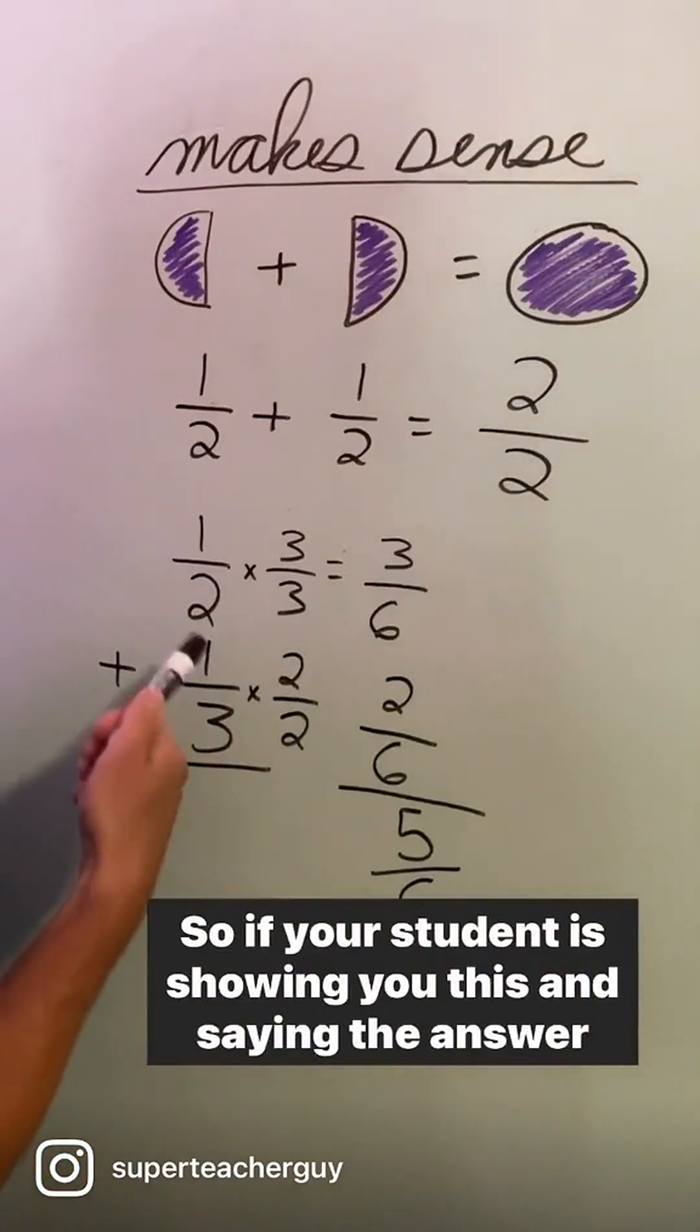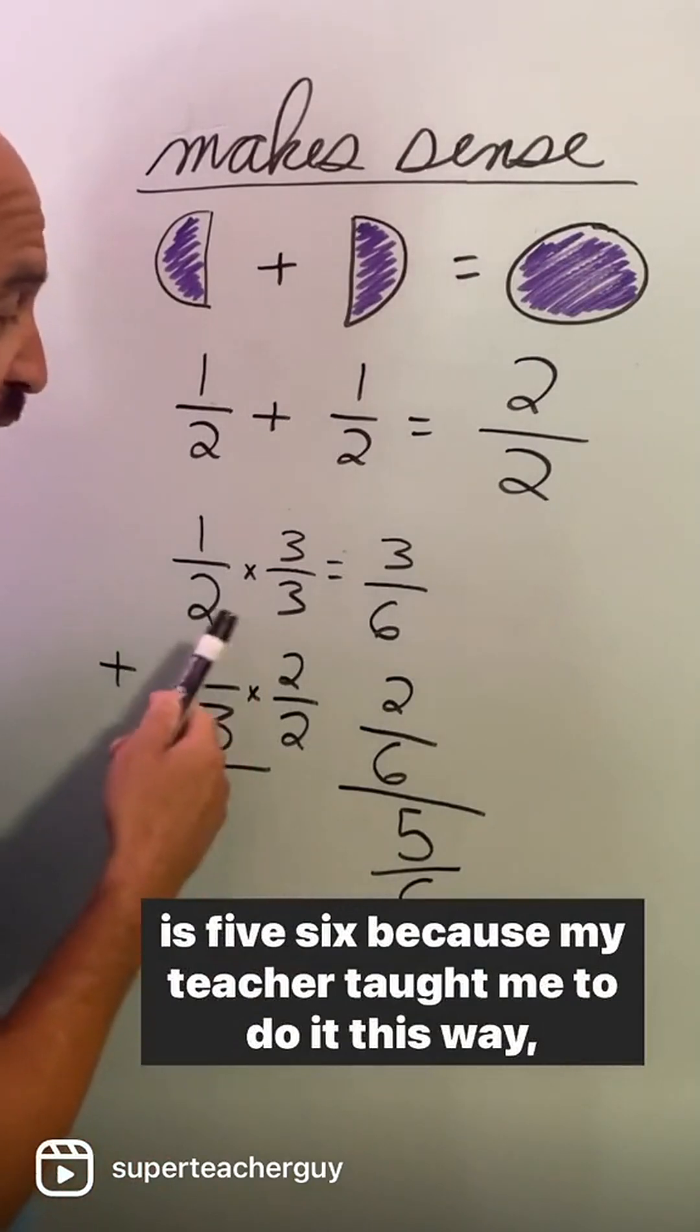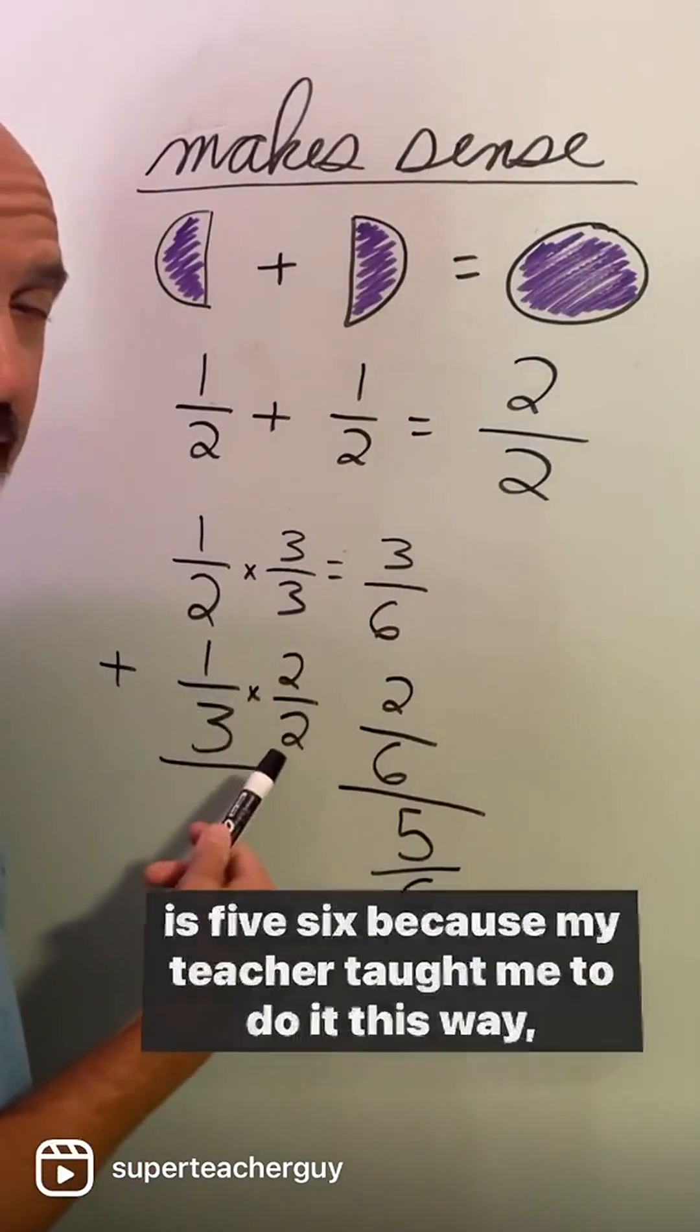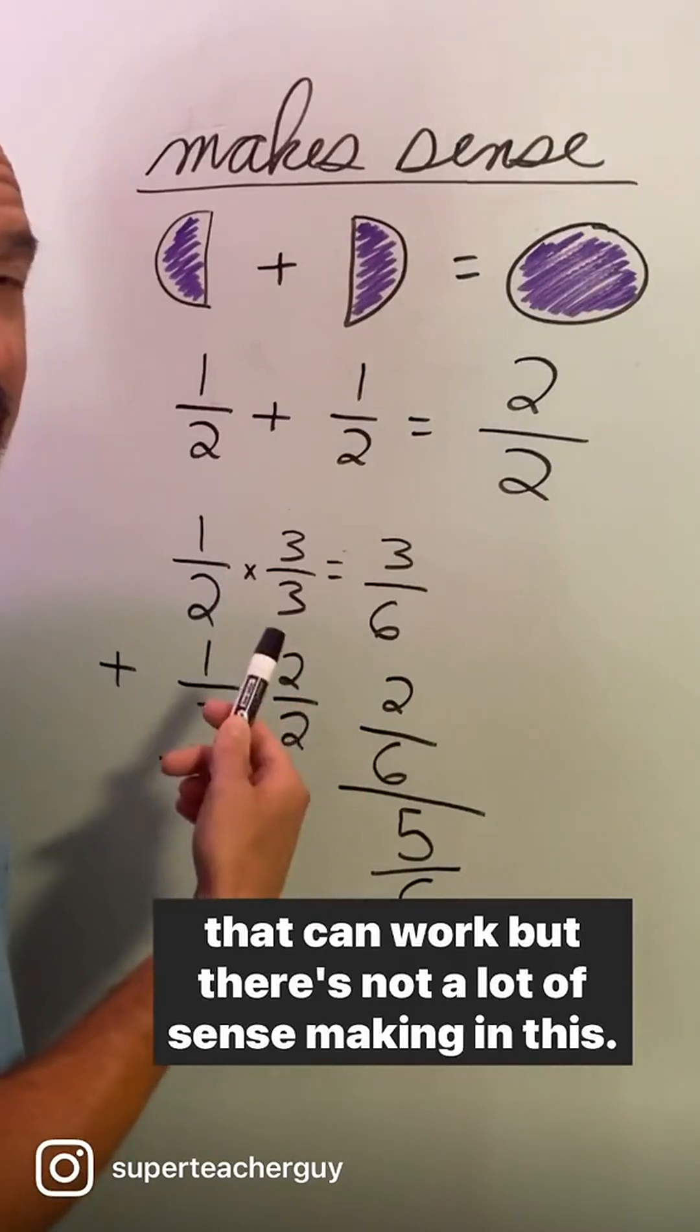So if your student is showing you this and saying the answer is five sixths because my teacher taught me to do it this way, that can work, but there's not a lot of sense making in this.